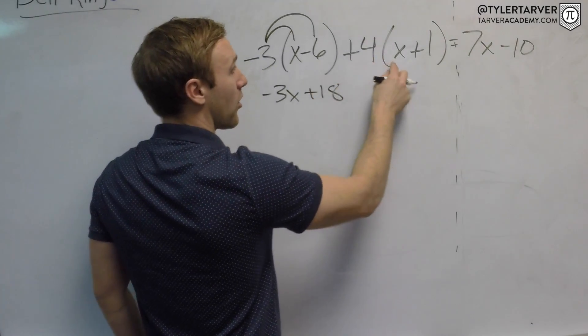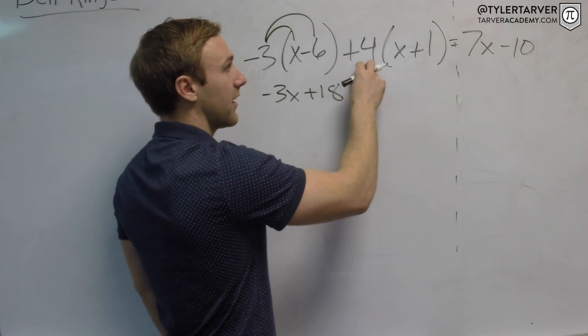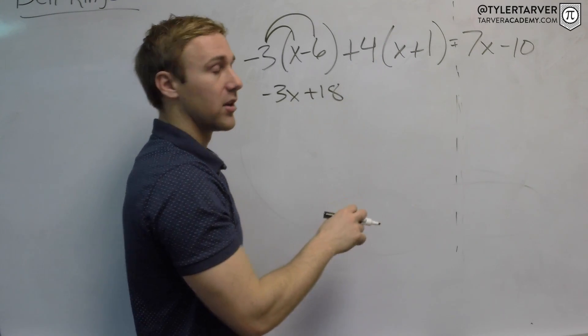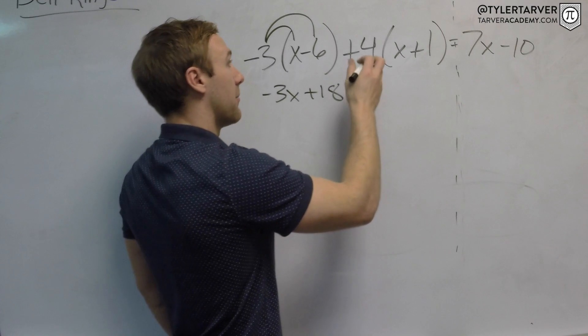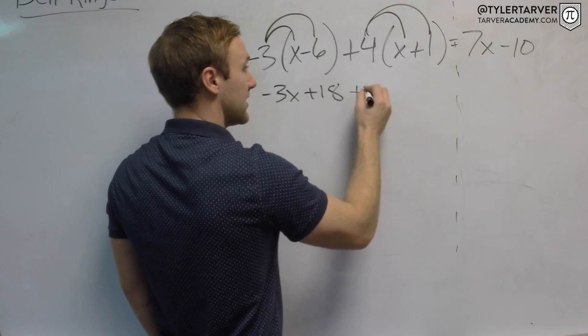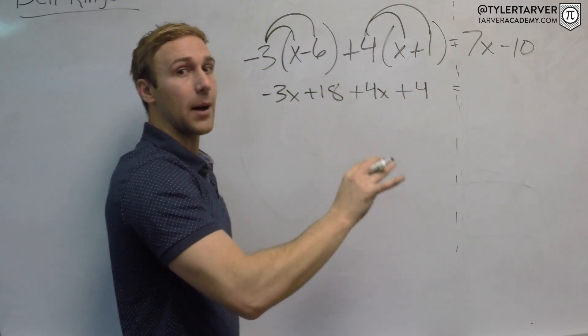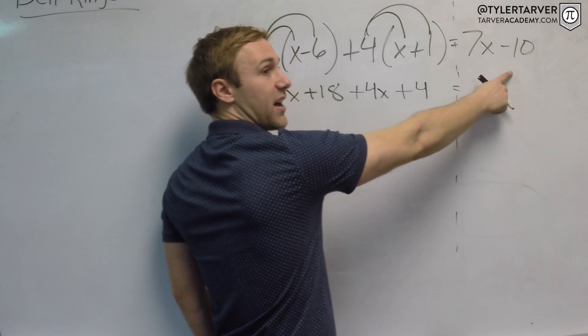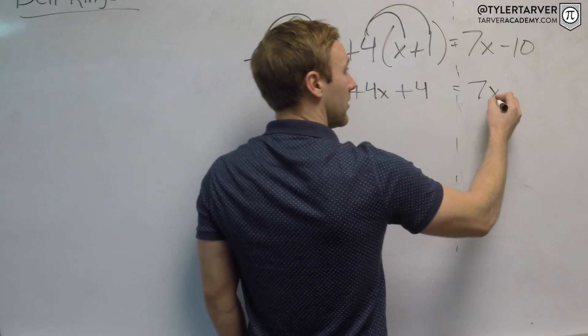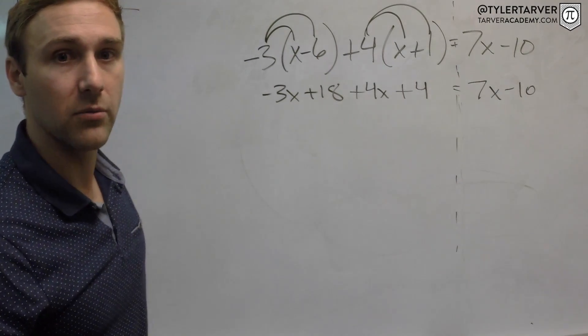Next, I've got to distribute this positive four to both of these. Now, a lot of times when people mess up, if that's a negative right there, don't forget to distribute the negative. The sign goes with the number. So positive four goes there and there. Four times x is positive four x. Four times one is positive four. I have not done any opposites. Over here, can I simplify anything? No. Because they don't have the same variable.